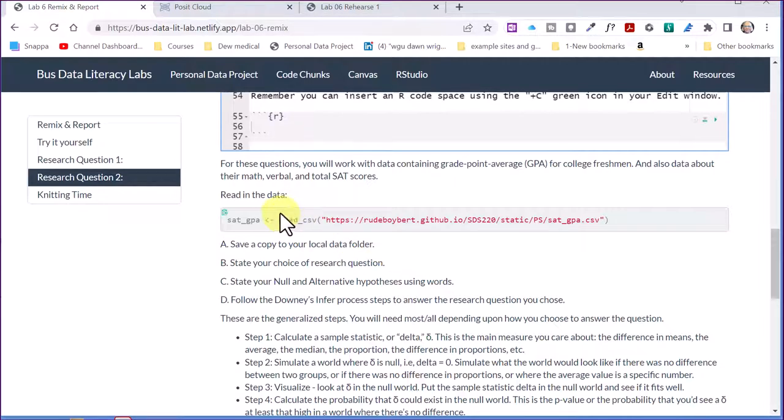in R markdown, we can type pretty much just like we would with Word or some other word processing program. So the first step, it says, read in the data. Always got to get the data in, just like we always load libraries. And it says, save to a local data folder.